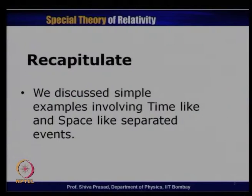Let us start with a recapitulation of what we did in our last lecture. We discussed some simple examples involving time-like and space-like separated events, and discussed how in a particular condition, it is possible to find a frame in which the two events occur at the same time but not at the same position, or at the same position but not at the same time.